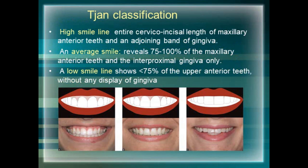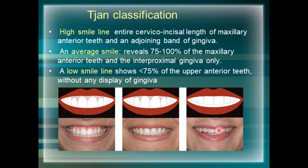Jan's classification divides the smile line into three types based on the display of maxillary anterior teeth and gingiva. In a high smile line, the entire cervico-incisal length of the maxillary anterior teeth and an adjoining band of gingiva are visible. In an average smile line, 75 to 100 percent of maxillary anterior teeth with interproximal gingiva is visible. In a low smile line, less than 75 percent of the upper anterior teeth is shown with no display of gingiva.